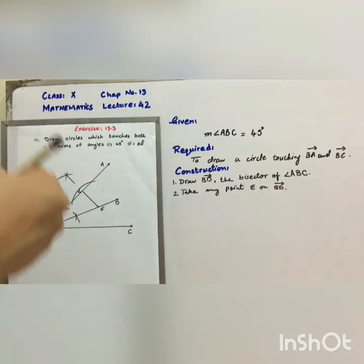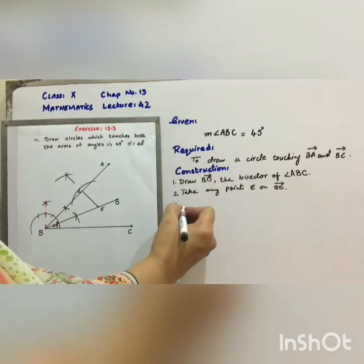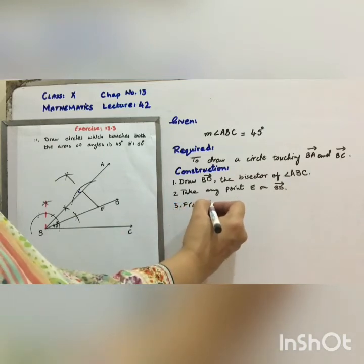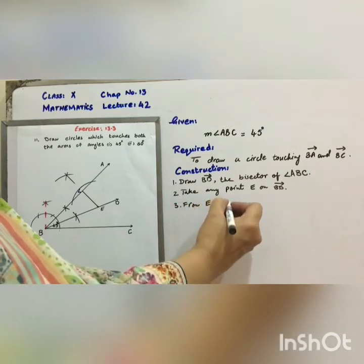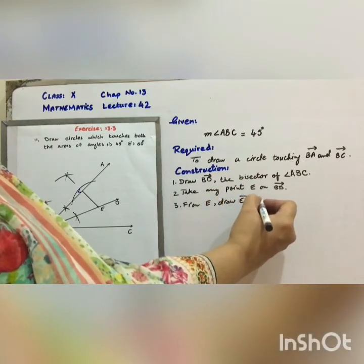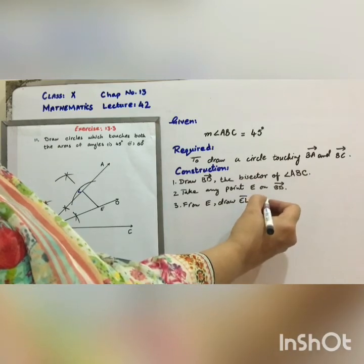Step number 3. From E, draw EL, which is perpendicular to ray BA.